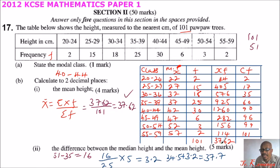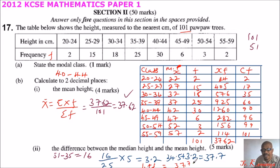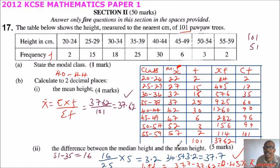Now we can find the difference. We have the mean = 37.62 and the median = 37.7. Since 37.7 is the bigger value: difference = 37.7 − 37.62 = 0.08.